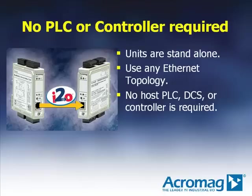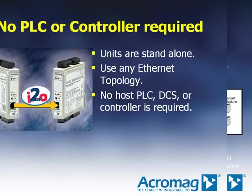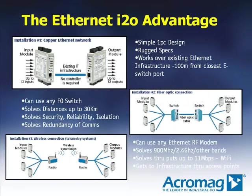Acromag's Ethernet I2O is a stand-alone solution. No PLC, controller, or dedicated CPU is needed for operation. Any Ethernet topology is supported. The Ethernet I2O advantage allows users to take full advantage of new or existing Ethernet networks, including the Internet. Since the change-of-state or timed-updates capability is located within the I/O, users can apply the products in pairs across any Ethernet link. The I/O modules are simple one-piece designs — no bus couplers, racks, power supplies, or other accessories are needed.